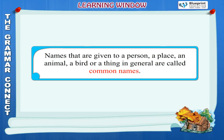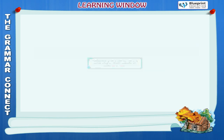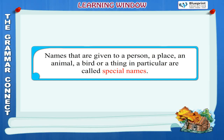Names that are given to a person, a place, an animal, a bird or a thing in general are called common names. Names that are given to a person, a place, an animal, a bird or a thing in particular are called special names.